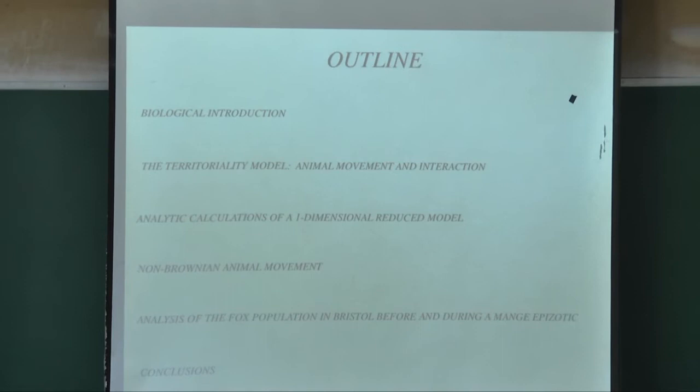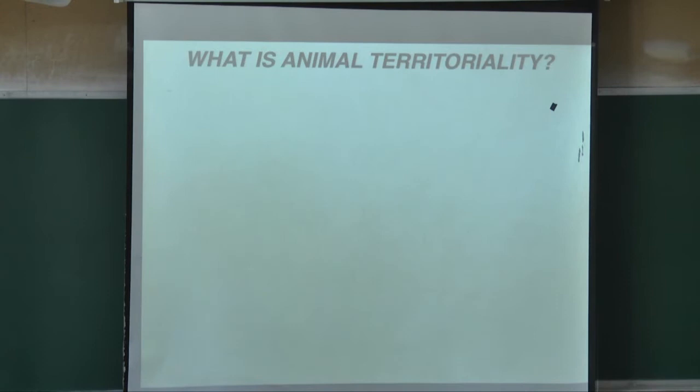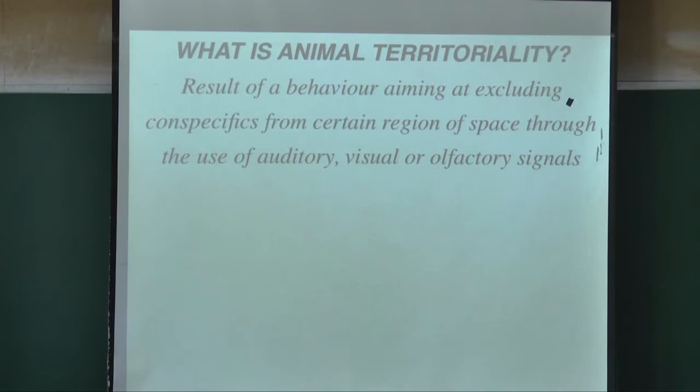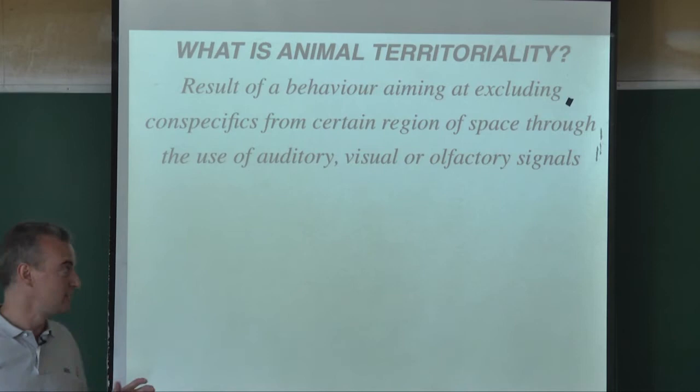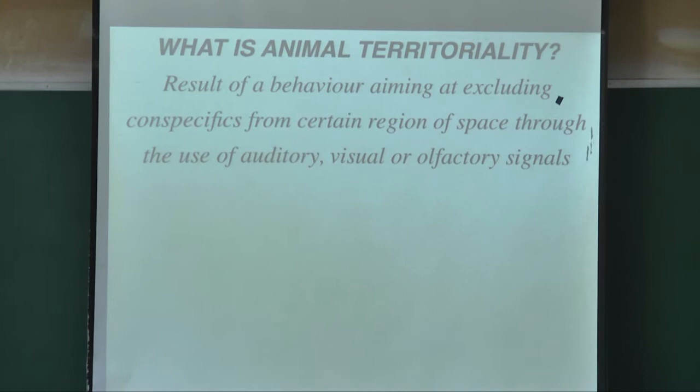Everybody probably knows what animal territoriality means, but let me re-emphasize. It's a broadcasting mechanism where you want to broadcast your presence to others — so whoever comes nearby understands that area is claimed by you. They use different methods: auditory, visual, and olfactory signals are the most common. We'll focus on the olfactory one as we talk about foxes.